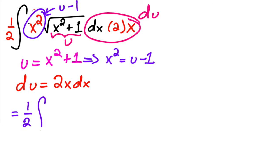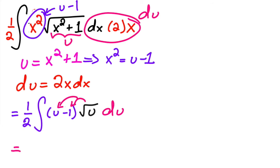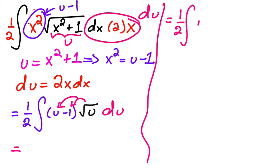So the integral becomes (1/2)∫(u − 1)·√u du. Distribute √u inside: this equals (1/2)∫(u^(3/2) − u^(1/2)) du.